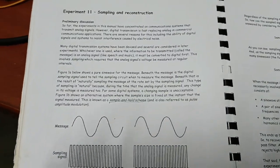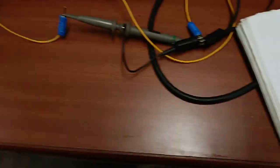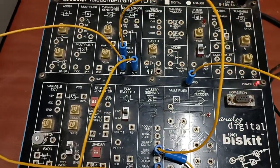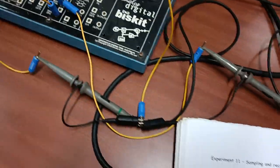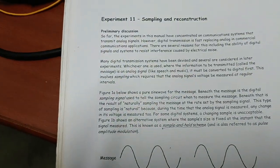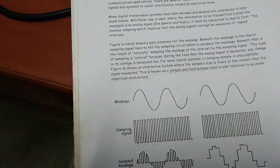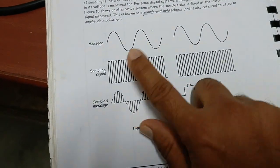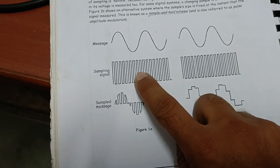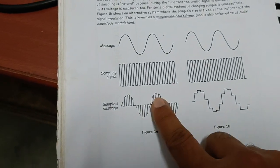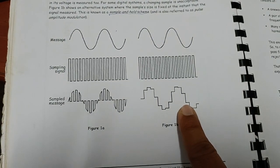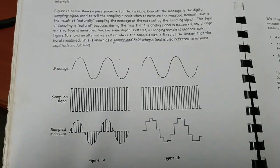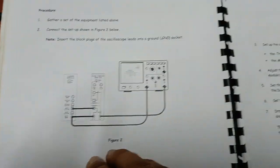Hello everyone, welcome to the class of Digital Communication Lab. As I have already discussed about this trainer kit, today I will explain the first experiment, which is sampling and reconstruction. The message signal is a sine wave, the sampling signal is a digital wave, and we have the sampled signal for natural sampling and for the sample-and-hold circuit. Let's go to the block diagram.